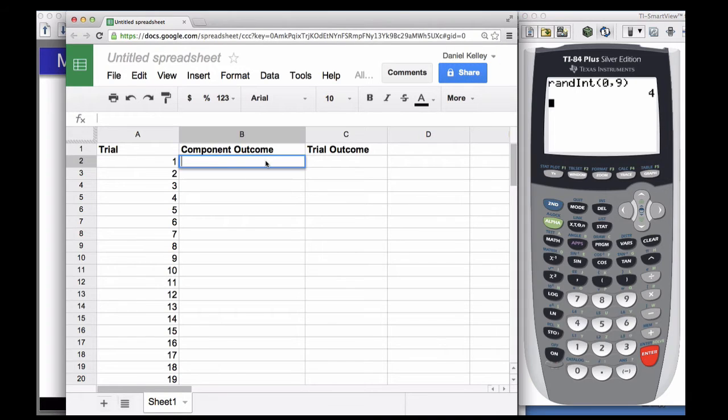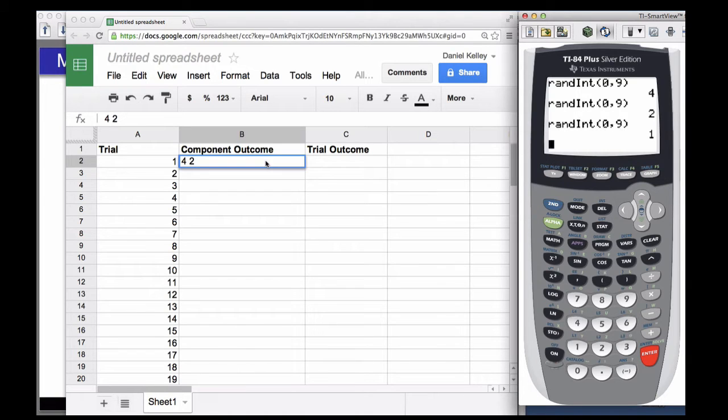And this randint function from 0 to 9 is going to give me a random integer between 0 and 9. So I got a 4 and a 2, a 1, 8, 8, and 5.